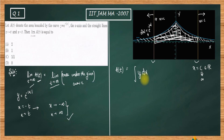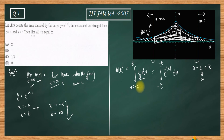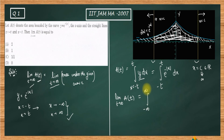We can represent A(t) as the integral of y dx, with x moving from -t to t. This is the standard single integration formula for the area between two vertical lines. So A(t) = integral from -t to t of e^(-|x|) dx. Taking the limit, as t goes to infinity, this becomes the integral from -∞ to +∞ of e^(-|x|) dx.